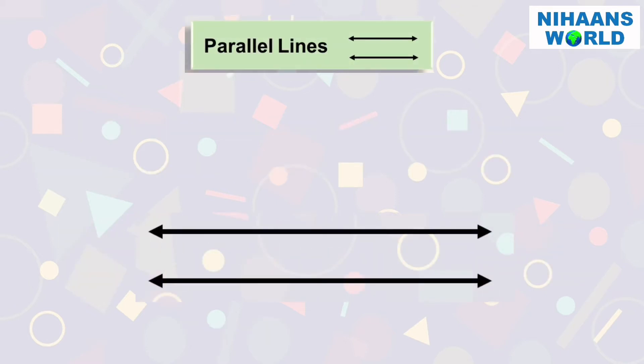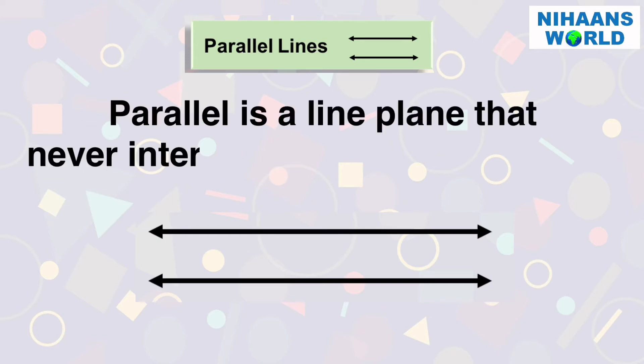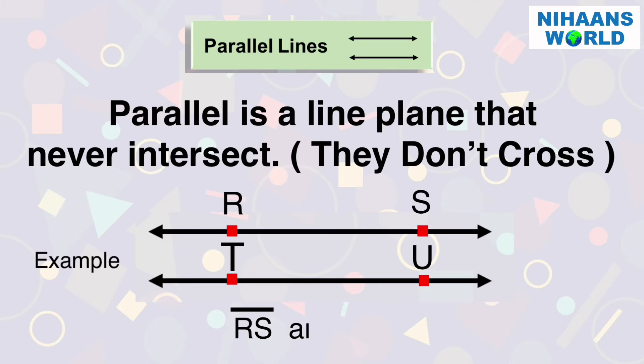What is a parallel line? A parallel line is a line in a plane that never intersect. For example, RS and TU.